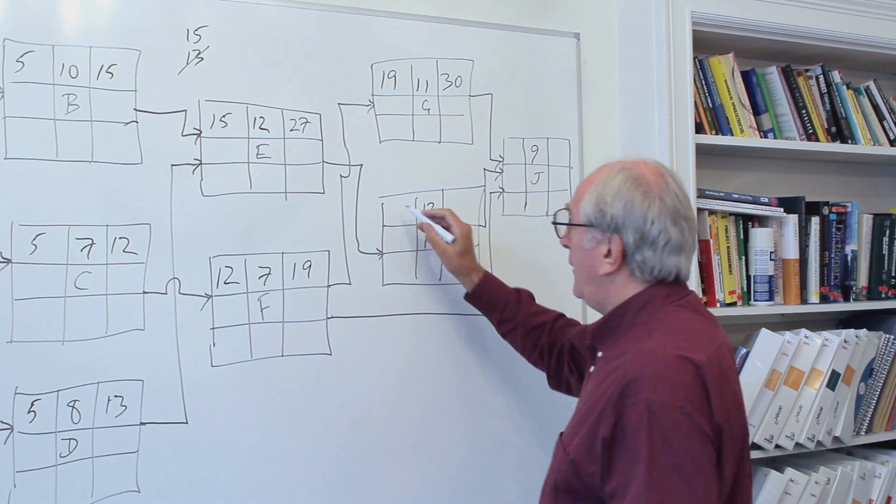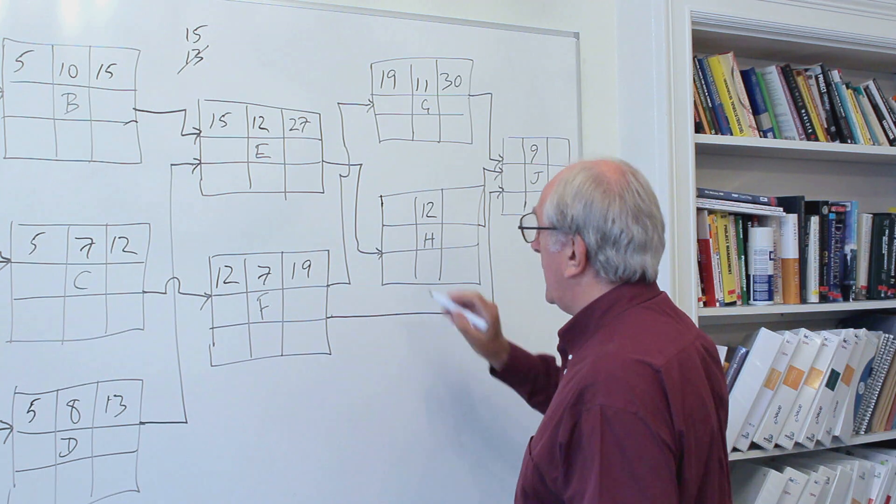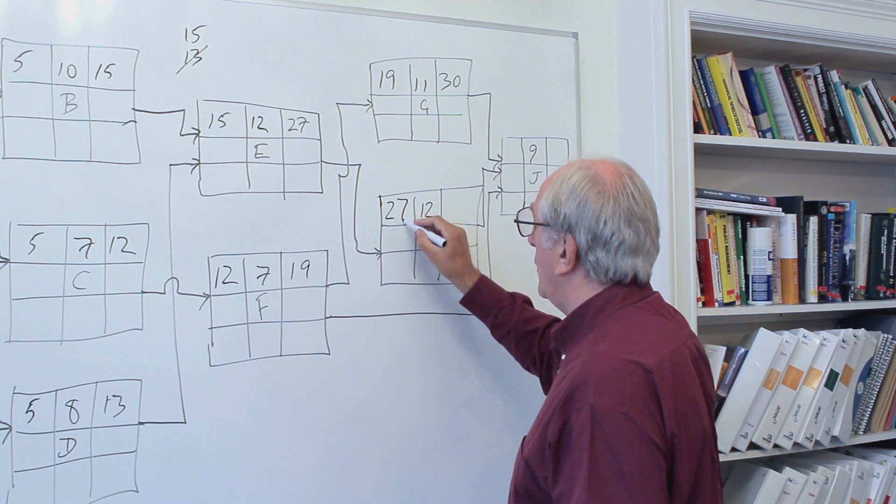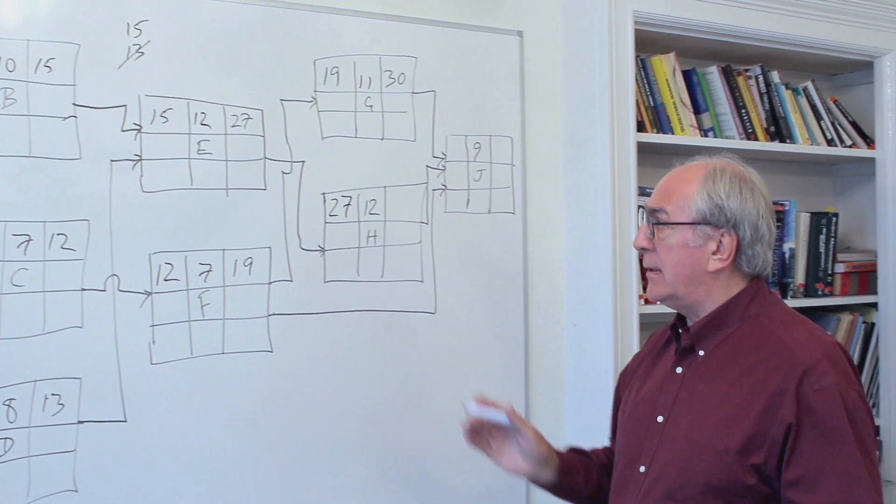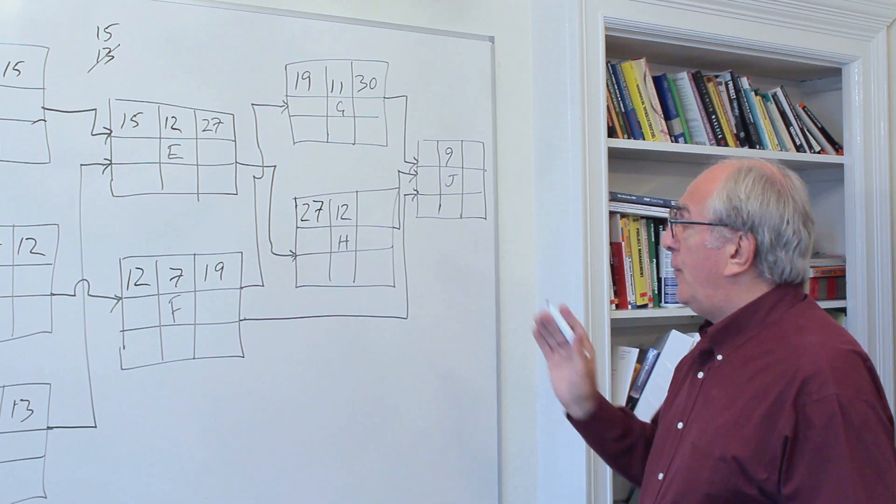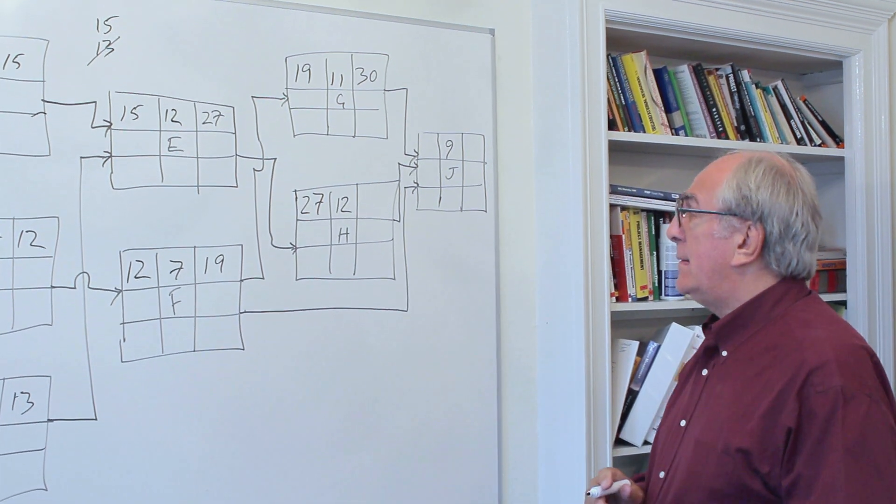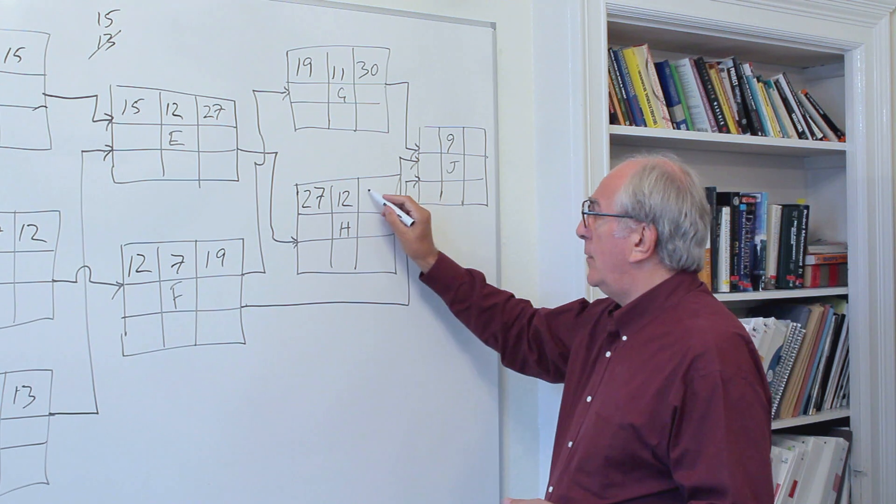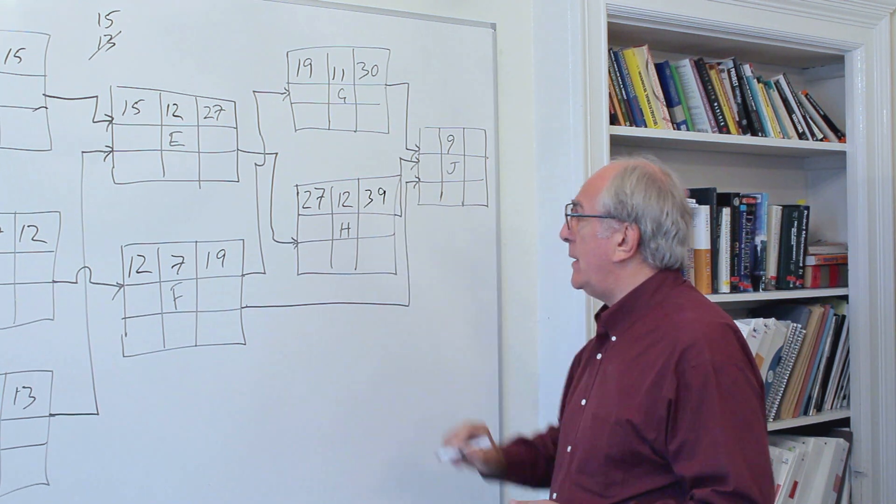If we look at E influencing or being a predecessor for activity H, then early finish of E is 27. That becomes the early start for H of 27, so 27 and 12 giving us an early finish of 39 for activity H.